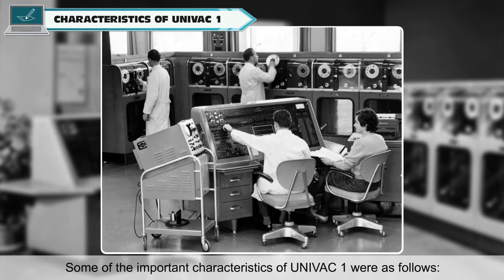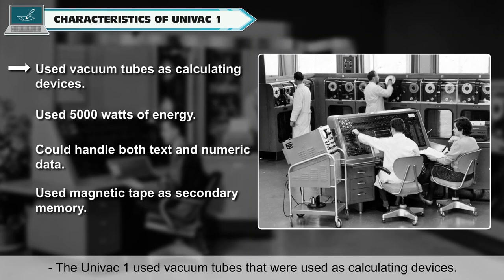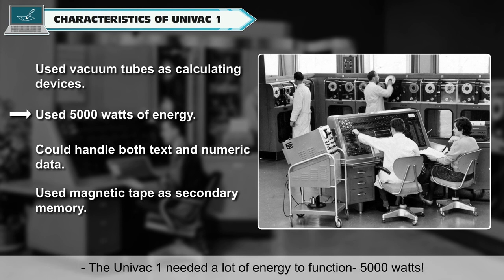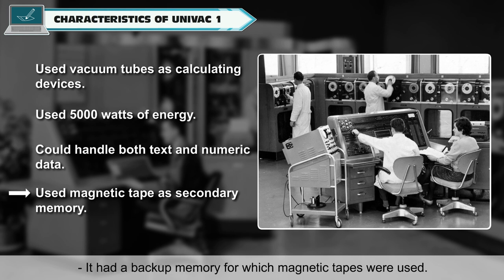Some of the important characteristics of UNIVAC 1 were as follows. It used vacuum tubes as calculating devices and needed a lot of energy to function — 5,000 watts. It was able to handle not only numbers but text as well, and it had a backup memory for which magnetic tapes were used.